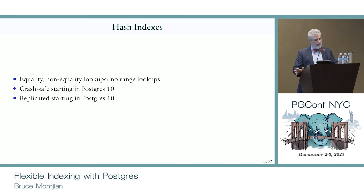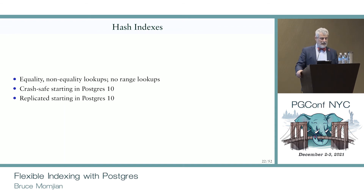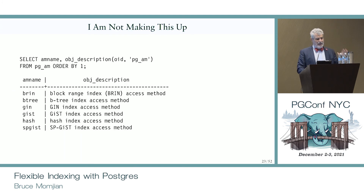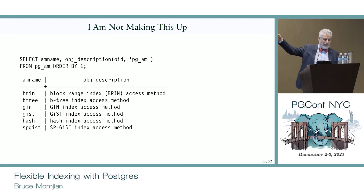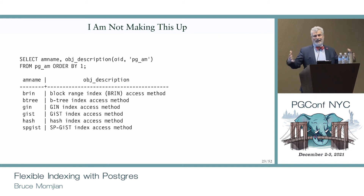Hash indexes: Postgres does have them, but they don't have a lot of value over Btree. They're perfect for equality matches but obviously can't do greater than or less than because of the hash — no range lookups. They are crash-safe and replication-safe since Postgres 10, which was not true in earlier versions. Notably, all index types in Postgres are defined in the system tables — because Postgres is extendable. If you run a query against the system tables, you'll get the list: BRIN, Btree, GIN, GIST, HASH, and SPGIST. This is why Postgres can add new indexing types so easily compared to other relational systems.